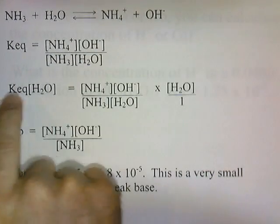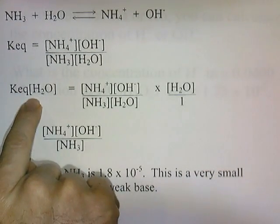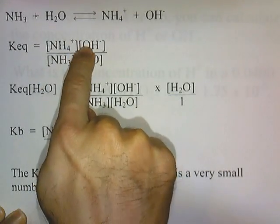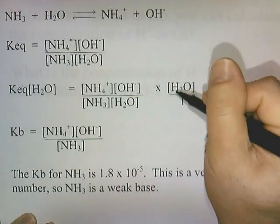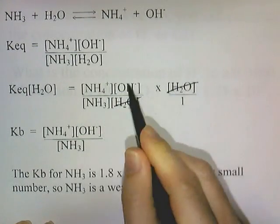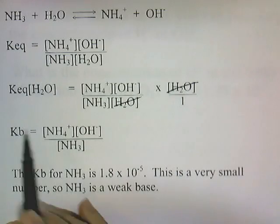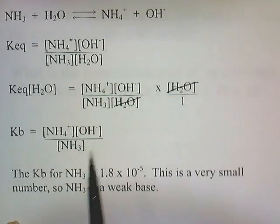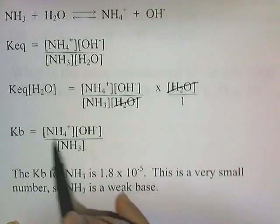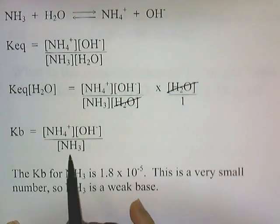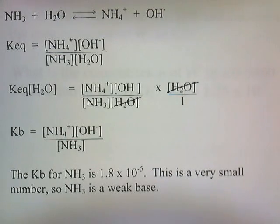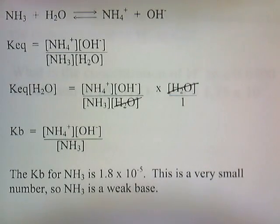We can do the same thing with this expression that we did with the acid expression that had water in it — multiply both sides by water. The concentration of water cancels, and in place of KEQ times H2O, since this is the equilibrium constant for a base, we write KB equals NH4+ times OH⁻ divided by NH3. The KB for ammonia is 1.8 times 10 to the negative fifth, which is also a very small number, so NH3 is a weak base.